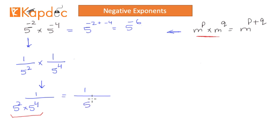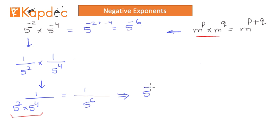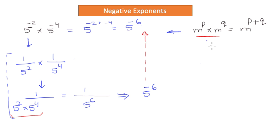The powers simply get added. 2 plus 4 makes 6, so the result is 1 over 5 to the power 6. Now I can rewrite this: since something is in the denominator and goes to the numerator, the powers get reversed. So 5 to the power 6 becomes 5 to the power negative 6. This is exactly the result we got in the first place. The key point is that the first rule of exponents also applies on negative exponents.